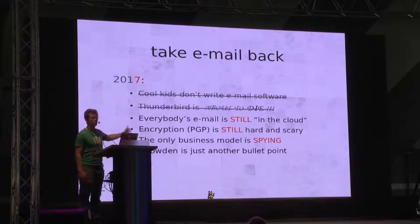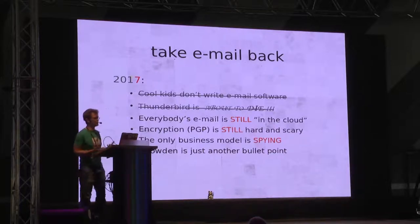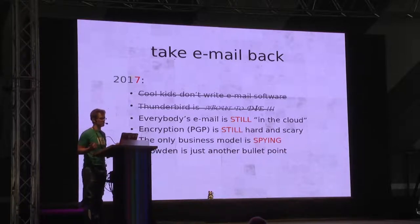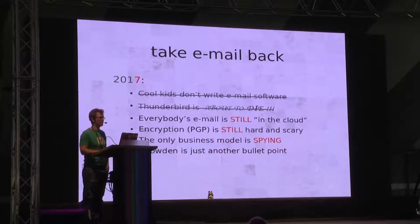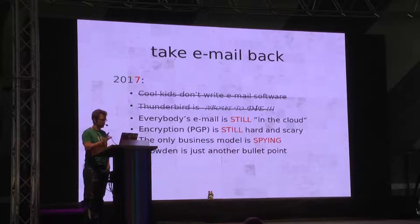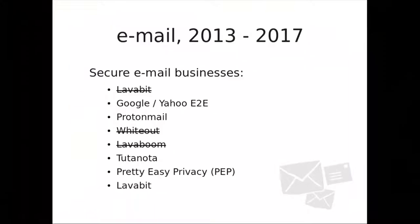Fast forward four years later — what has changed? Point one is no longer true: cool kids do write email software now. There's a lot more going on in email security. Thunderbird is no longer about to die — they've worked things out at Mozilla and have more developers than I do. In the last four years, we've seen a bunch of businesses start up, all focused on email privacy. Lavabit died and then came back to life — they recently reopened, but they're still storing people's email in the cloud.